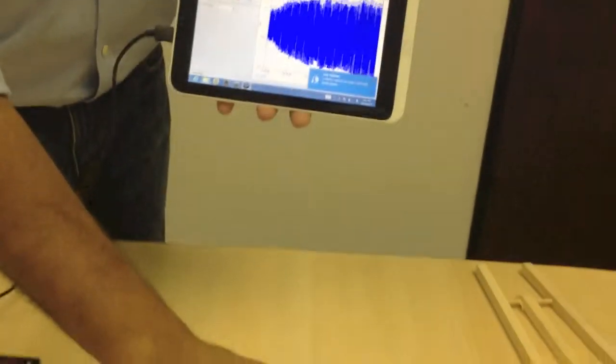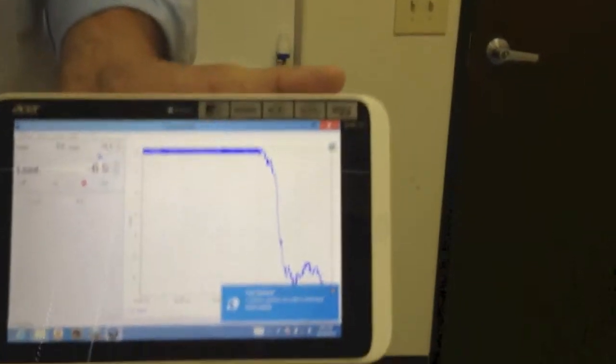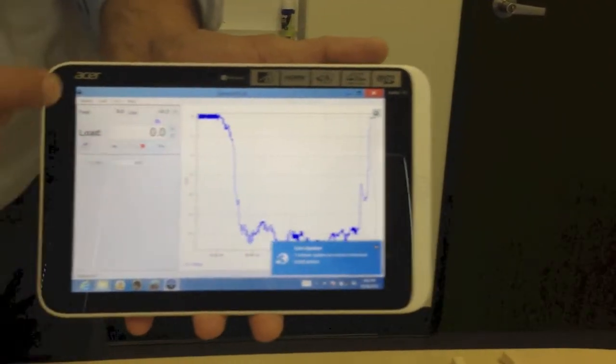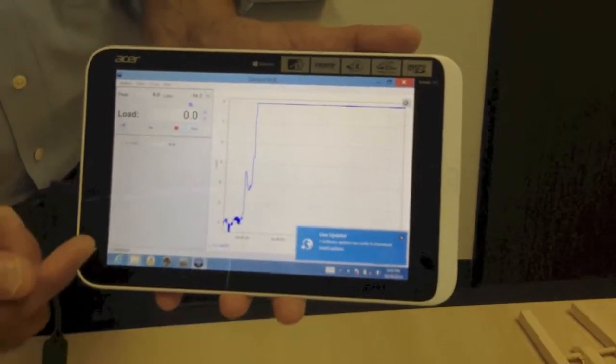And as you can see as I apply a compression force here, you can see that sensor view shows you not only the actual force applied, it also shows you the peak and the low values. It plots the data.